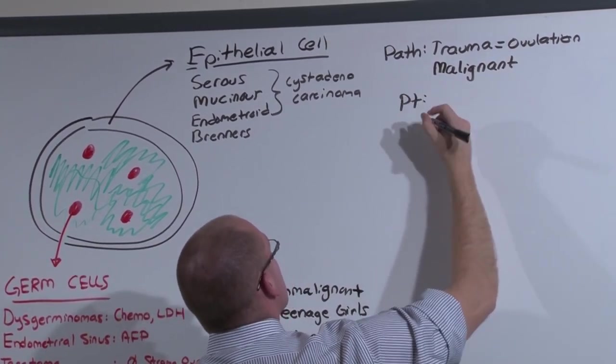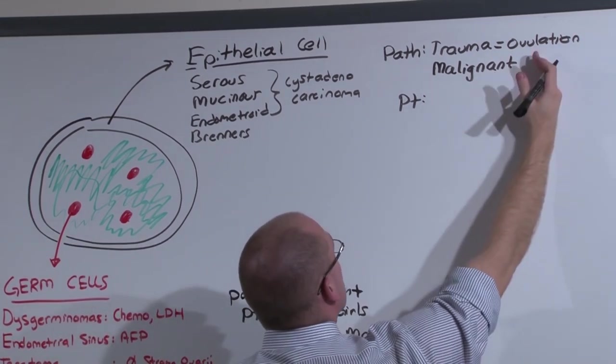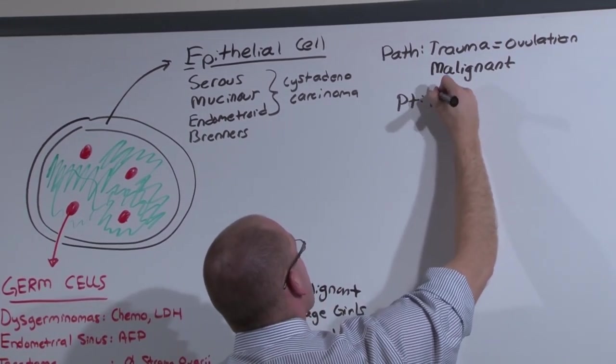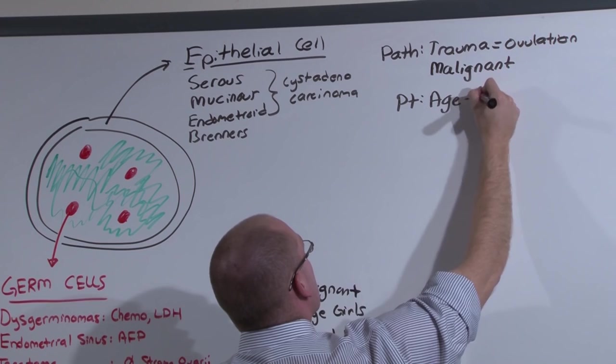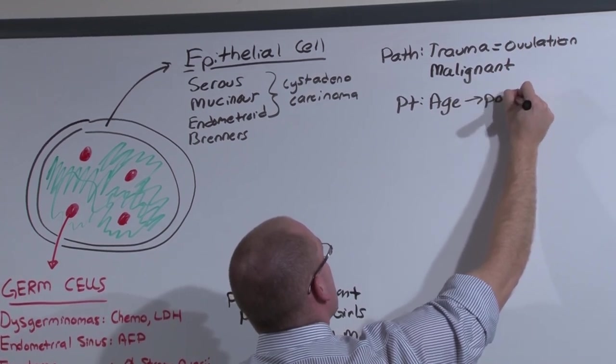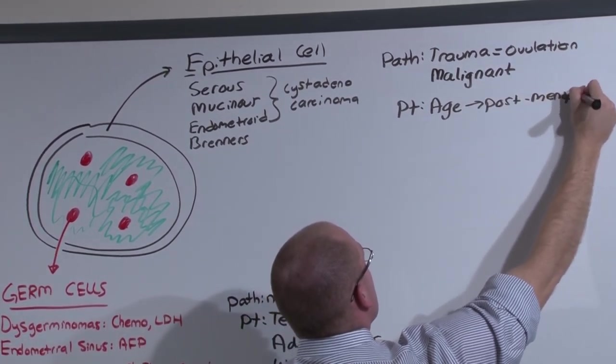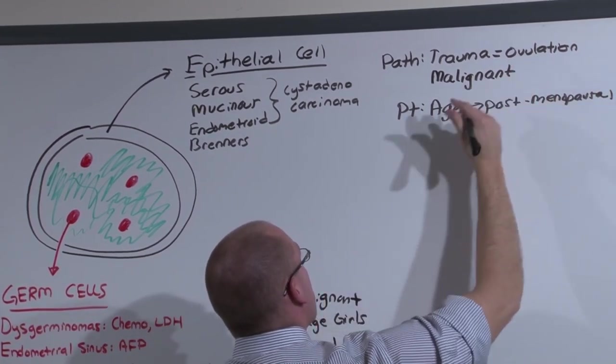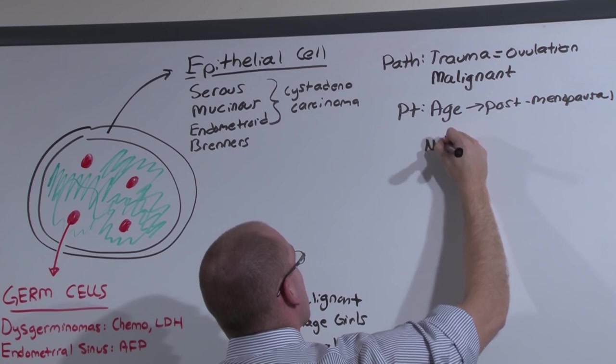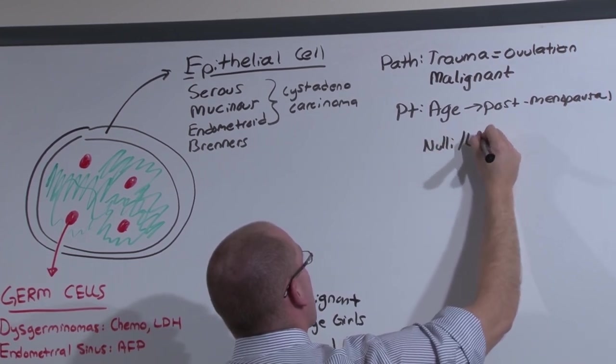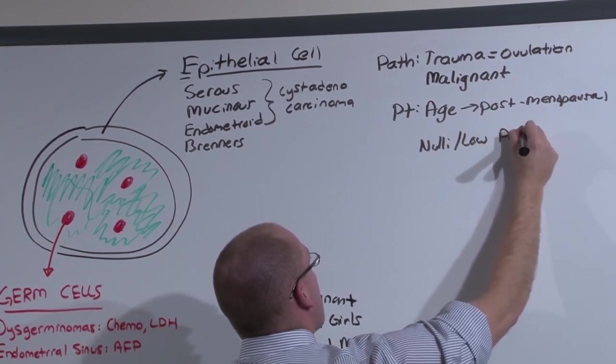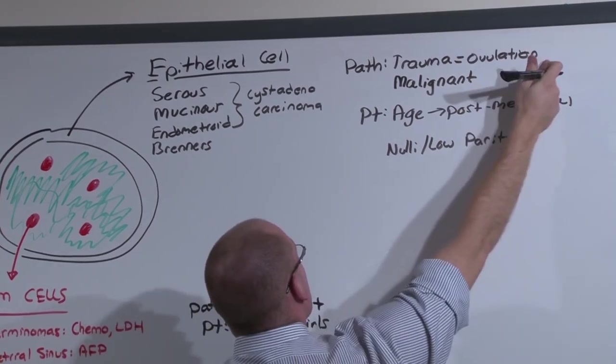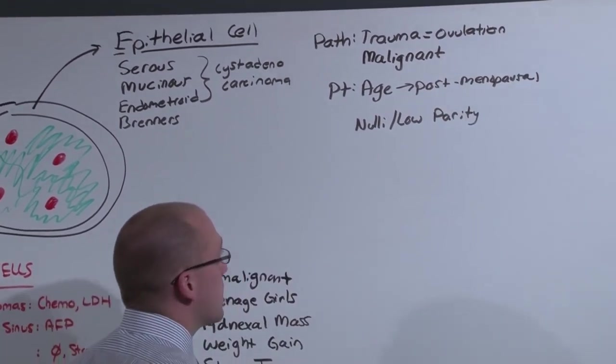The patient is going to be someone who has suffered multiple ovulations. So risk increases with age, generally post-menopausal. If the older she is, the more ovulation she has had. Likewise, someone who was never pregnant or had a low number of pregnancies thereby had more ovulations and is at increased risk.